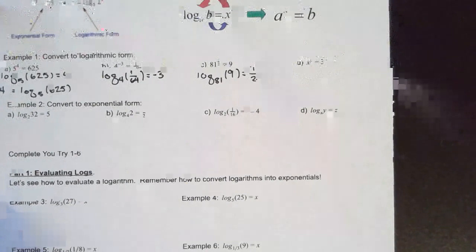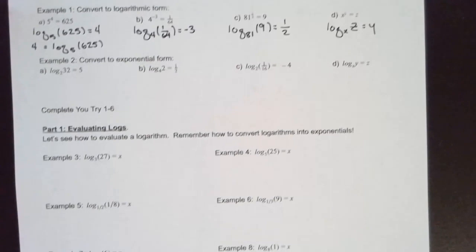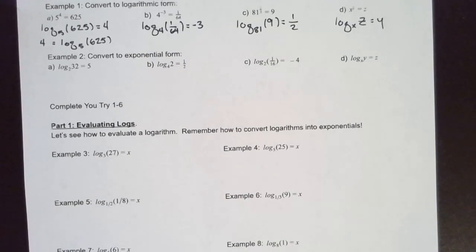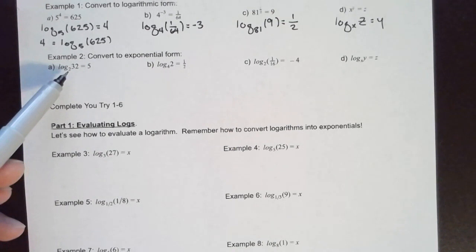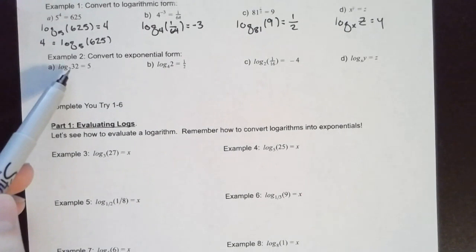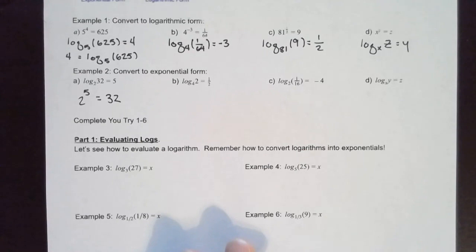The next set of examples goes the other way — from log form to exponential form. Here we have log base 2 of 32 equals 5. The exponent is always this thing by itself on one side, and the base is the subscript. So 2 to the fifth power equals 32. Nothing to solve here — we're just writing in the other form.